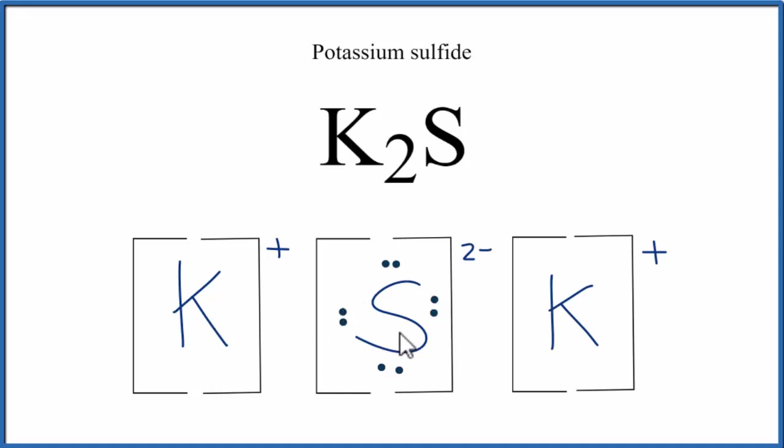This is useful because it shows us how the valence electrons are transferred between the elements. This is Dr. B with the Lewis structure for K2S, potassium sulfide, and thanks for watching.